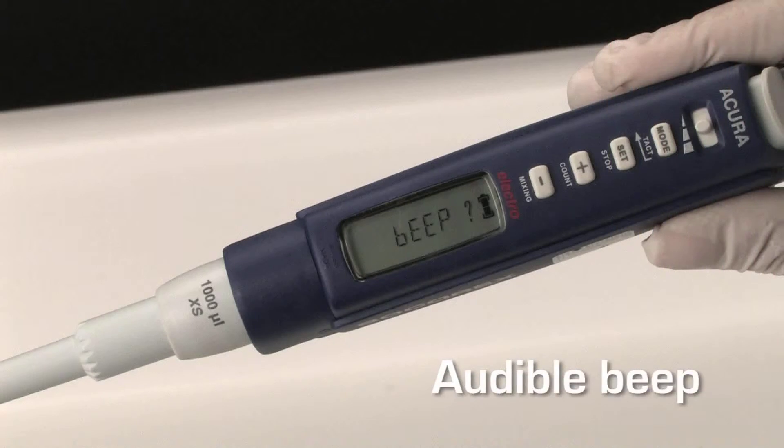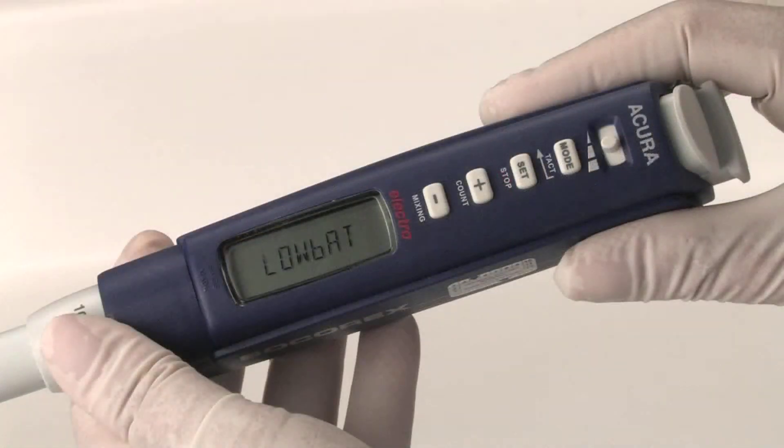The audible key beep can be turned off any time. The battery indicator will display power level. When low battery is displayed, the pipet needs to be charged or the battery changed.